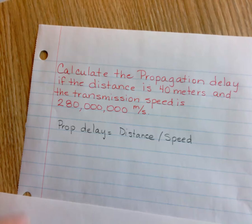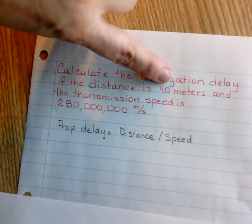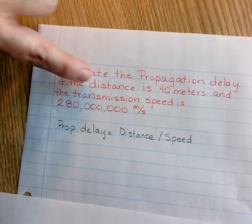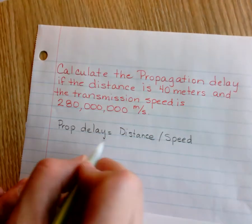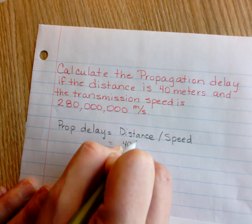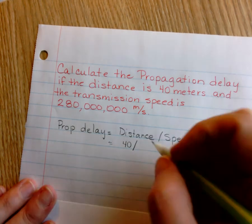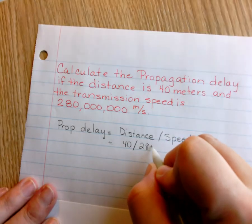In this problem, we're going to substitute in the 40 meters for the distance and the transmission speed of 280,000,000 m/s for the speed. So we get 40 meters divided by 280,000,000.